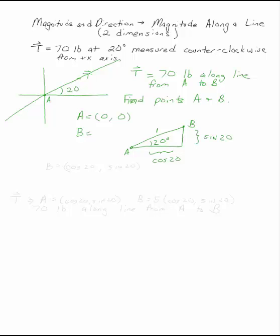So we can let the point B be cosine 20, sine 20. That's two points along that line.